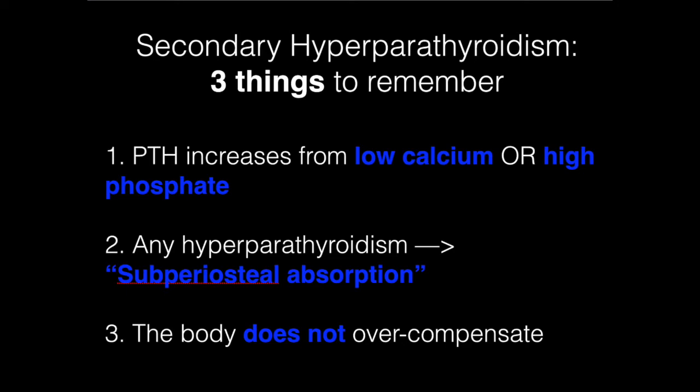Second, the buzzword for any hyperparathyroidism — not just secondary — in the question stem is subperiosteal absorption. So high PTH means subperiosteal absorption. They might also say subperiosteal cysts or subperiosteal cavities. This is a description of osteitis fibrosa cystica. It occurs because PTH grabs calcium from the bone and leaves those cysts behind. It's important to recognize because they might describe it and ask you for the lab results.